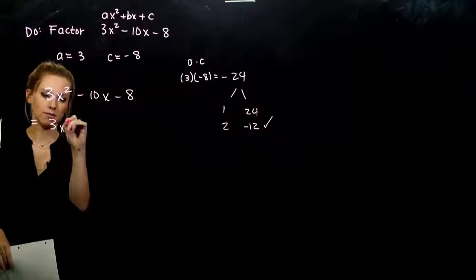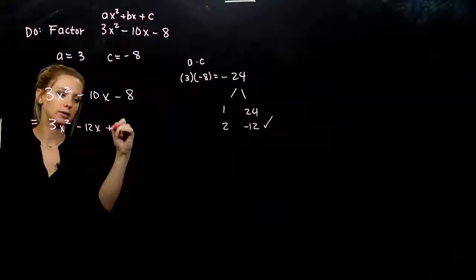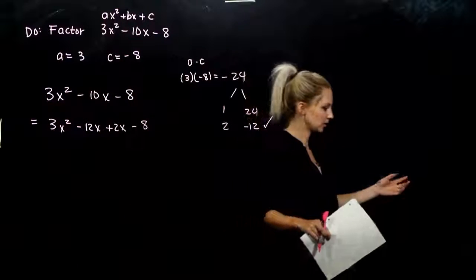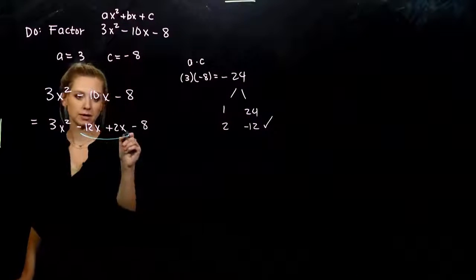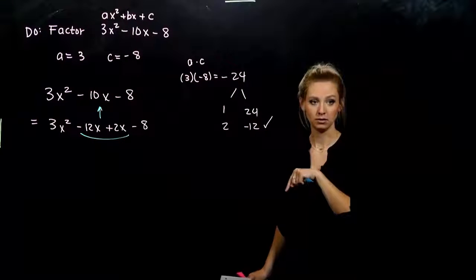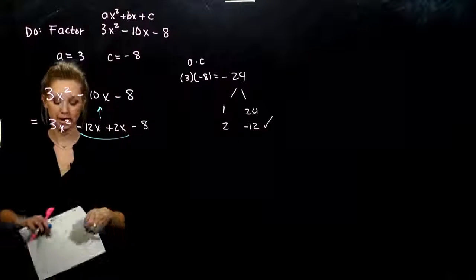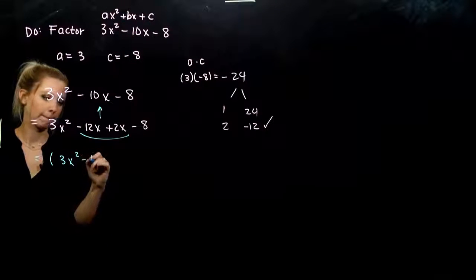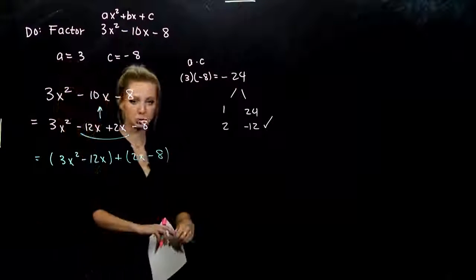It's going to feel funny, but you'll see what we're doing in a minute. I'm going to write negative 12x plus 2x in place of negative 10x. Is it still the same polynomial? Yes — if I combine like terms here, I get back to that middle term. We want to design it to have four terms now, because when we have four terms, how do we factor? By grouping. So grouping the first two and the last two, we can go on as normal.